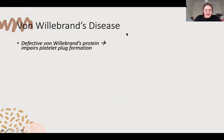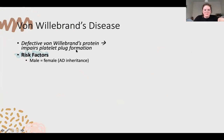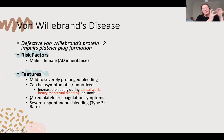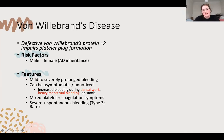Von Willebrand's disease is related to the platelet plug rather than the coagulation aspect - you can't form that first step. It's not gender-related in terms of risk factors. There's a spectrum of disease - it can be asymptomatic, picked up incidentally in someone with heavy menstrual bleeding or the first time they had dental procedures. Wisdom teeth removal where they bled a lot is a good question to ask. It can present as both a platelet picture and a coagulation picture because von Willebrand's interacts with factor eight and prolongs its life.